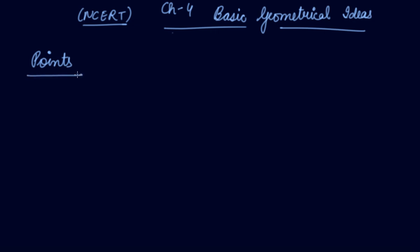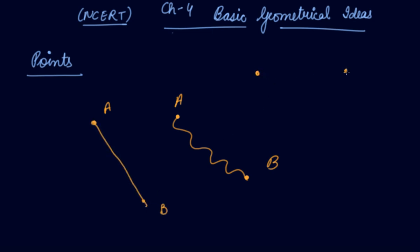Let's understand about points. When you take a paper and you draw two dots, these are the points A and B. Now you can join these points like this, or you can join these points with a straight line. So these are the tiny dots which help you to make further figures in geometry.